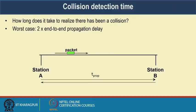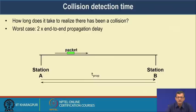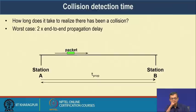Regarding how long it takes to detect a collision in CSMA/CD, the worst case is twice the end-to-end propagation delay. It takes up to two times the propagation delay before a station can determine whether a collision has occurred.